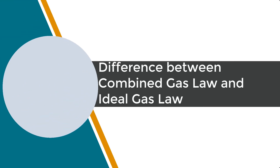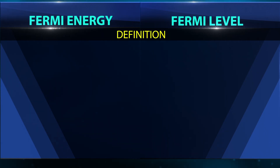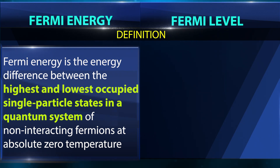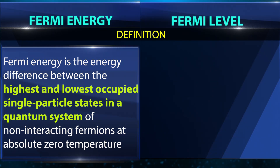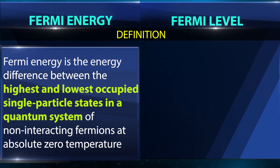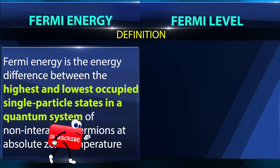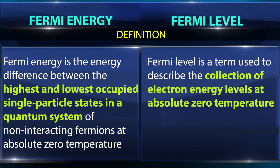The difference between Fermi energy and Fermi level: Fermi energy is the energy difference between the highest and lowest occupied single particle states in a quantum system of non-interacting fermions at absolute zero temperature. Fermi level is a term used to describe the collection of electron energy levels at absolute zero temperature.